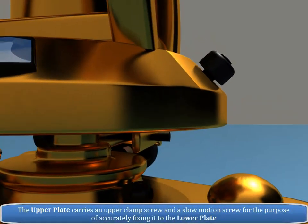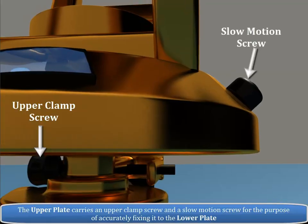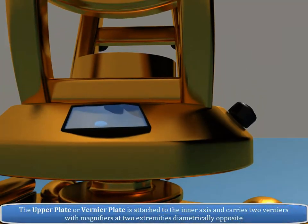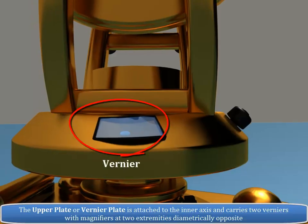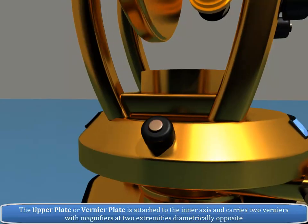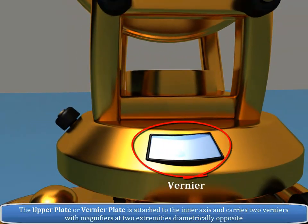The upper plate carries an upper clamp screw and a slow-motion screw for the purpose of accurately fixing it to the lower plate. The upper plate or vernier plate is attached to the inner axis and carries two verniers with magnifiers at two extremities diametrically opposite.